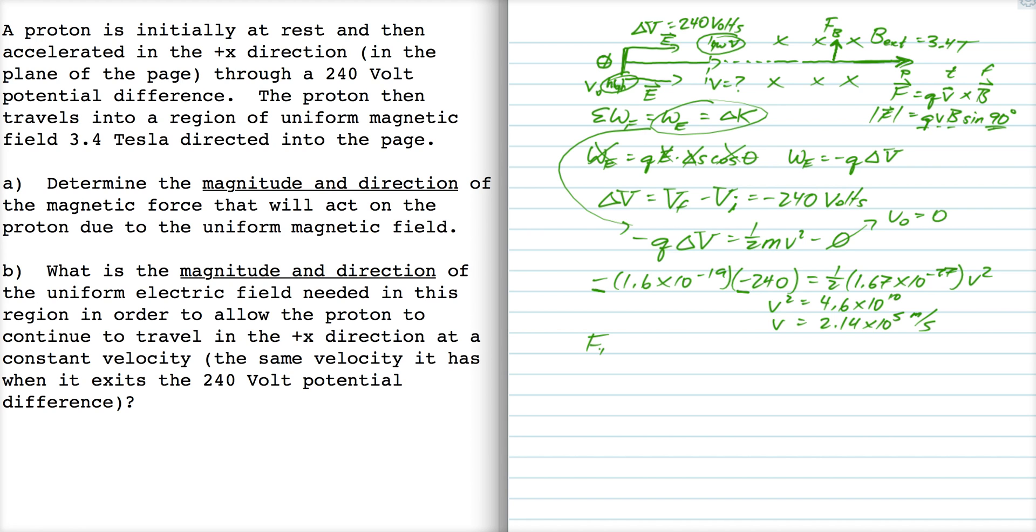So the force, qvb sin 90, if I multiply those things together, I get 1.2 times 10 to the minus 13 newtons in the plus y direction. That may not seem like a very big force, but remember that the mass of the proton is extremely small. So that's actually going to lead to quite a huge acceleration if there aren't any other forces. It's going to make that proton move around in a really tight little circle.